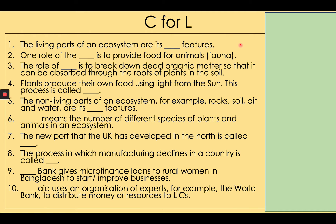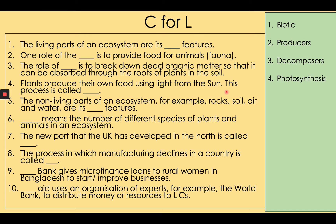Number one: the living parts of an ecosystem are its biotic features. Two: one role of the producers is to provide food for animals, also known as fauna. Three: the role of decomposers is to break down dead organic matter so that it can be absorbed through the roots of plants in the soil or in the water in an ocean ecosystem. Four: plants produce their own food using light from the sun — this process is called photosynthesis. Five: the non-living parts of an ecosystem, for example rocks, soil, air and water, are its abiotic features. Six: biodiversity means the number of different species of plants and animals in an ecosystem.